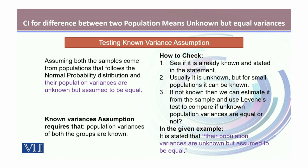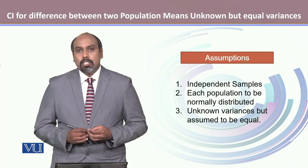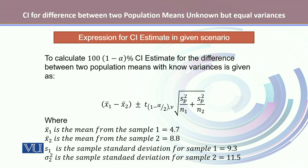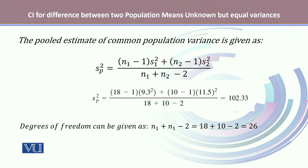Hence we take the scenario where the samples are independent, each population follows the normal distribution, and the variances are unknown but equal. We use the given formula to calculate the 95% confidence interval estimate. With the given information, S₁² is 9.3² and S₂² is 11.5², which are the variances for sample 1 and sample 2. We use these to calculate SP², which turns out to be 102.33.